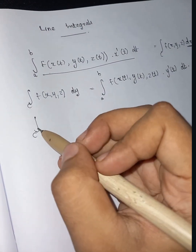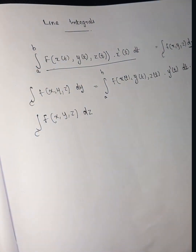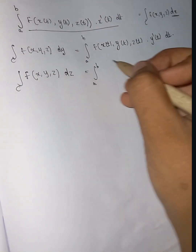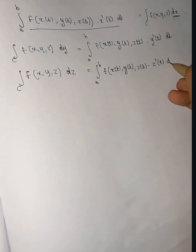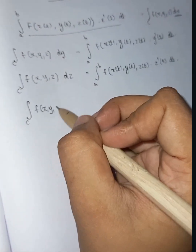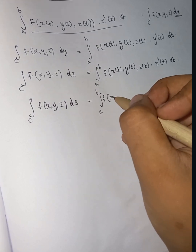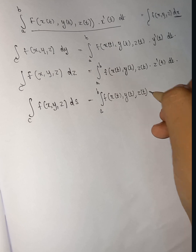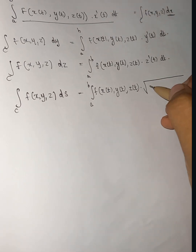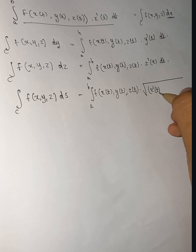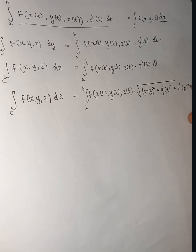Now for the line integral with respect to arc length ds: the integral of f along C from a to b of f(x, y, z) ds equals the integral from a to b of f(x(t), y(t), z(t)) times the square root of [x'(t)² + y'(t)² + z'(t)²] dt.